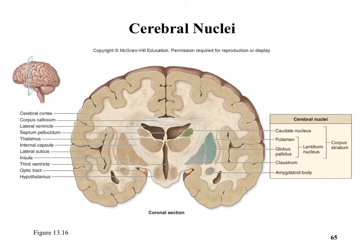Deeper in the cerebrum you have areas of gray matter. You don't need to identify them all — just know they're important for coordinating movements. The amygdala region you should know: it's associated with emotion. This picture also shows the lateral ventricles in relation to the third ventricle.